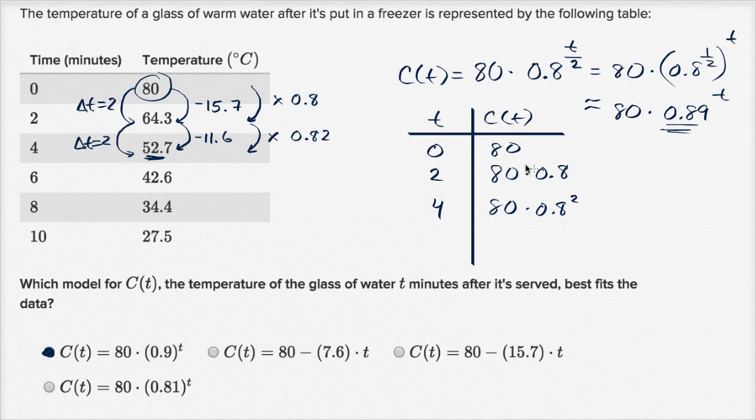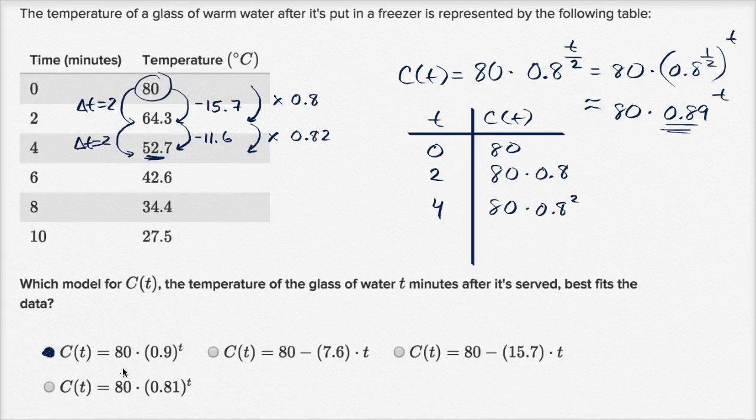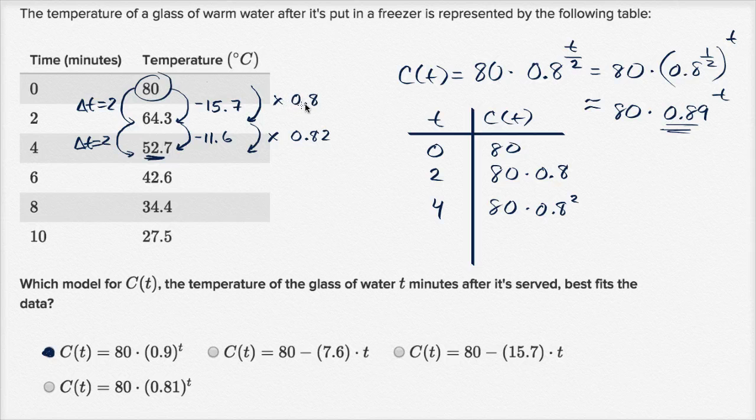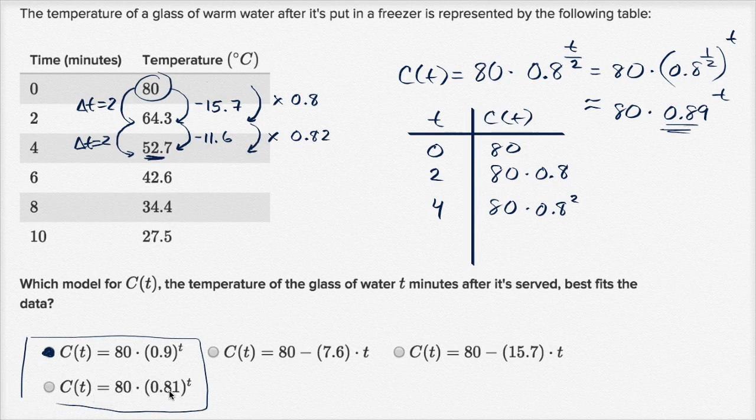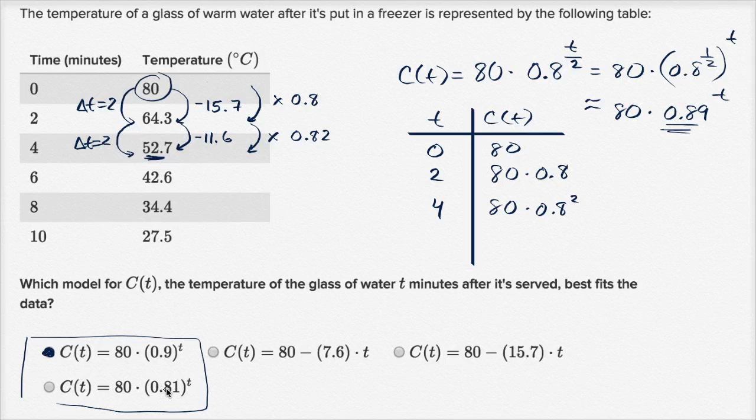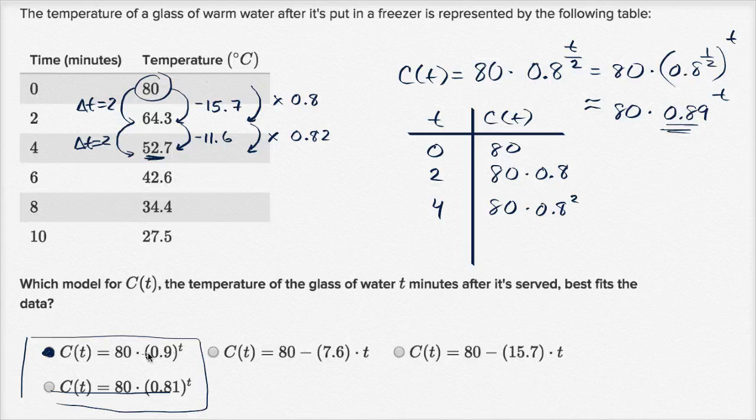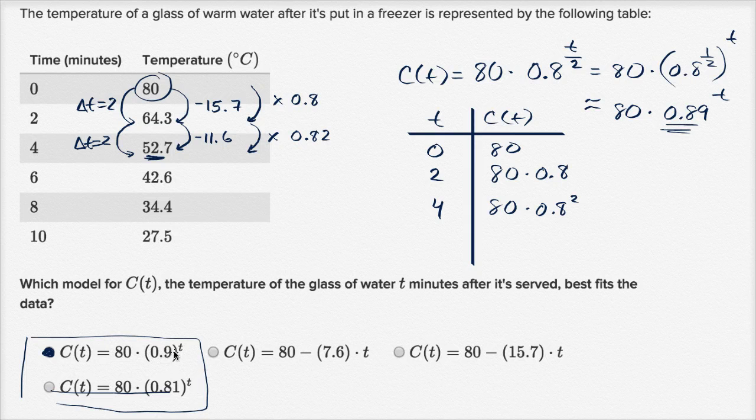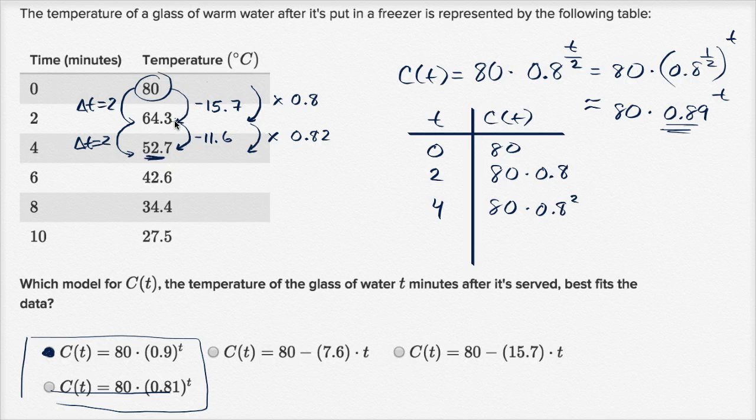Another way of doing it that might have been simpler: 80 is our initial state. All of these start with 80 when T is equal to 0. But it's clearly not a linear model because we're not changing by even roughly the same amount every time. But it looks like every two minutes we're changing by a factor of 0.8. So we're going to have an exponential model. This one down here you could rule out because we're not changing by a factor of 0.81 every minute, we're changing by a factor of 0.81 every two minutes. And if I'm changing by a factor of 0.9 every minute, then that would be 0.81 every two minutes, which is pretty close to what we're seeing here. So once again, that's why we like that first choice.